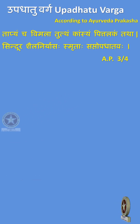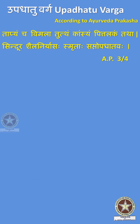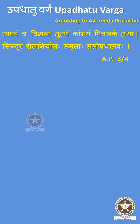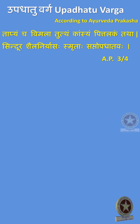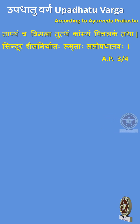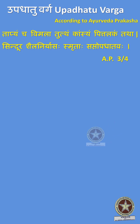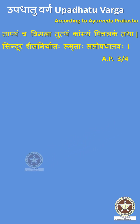Reference: Ayurveda Prakashah Chapter 3 Shloka 4. The shloka reads: Tapyamcha Vimala, Tuttam, Kansyam, Pittalakam, Sinduram, Shailaniriyasah, Smritah Sapta Upadhatavah. These 7 drugs have been told under the Upadhatu category.